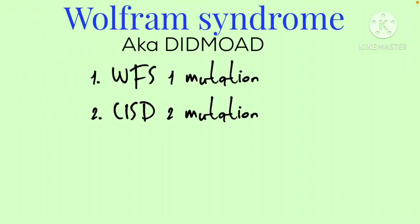Wolfram syndrome is also known as DIDMOAD syndrome. DI stands for diabetes insipidus, DM stands for diabetes mellitus, OA stands for optic atrophy, and D stands for deafness.